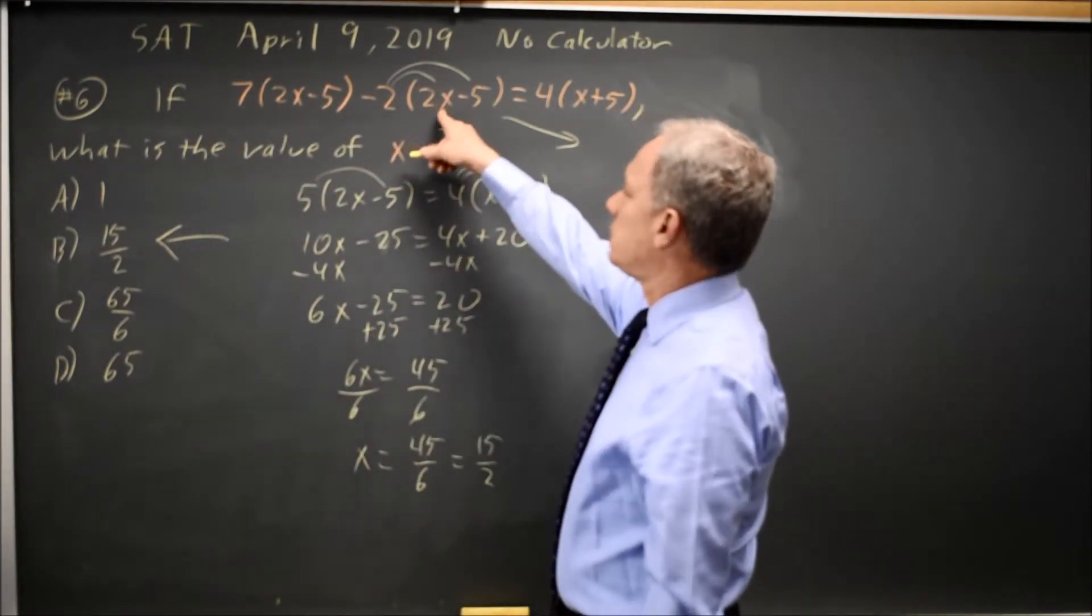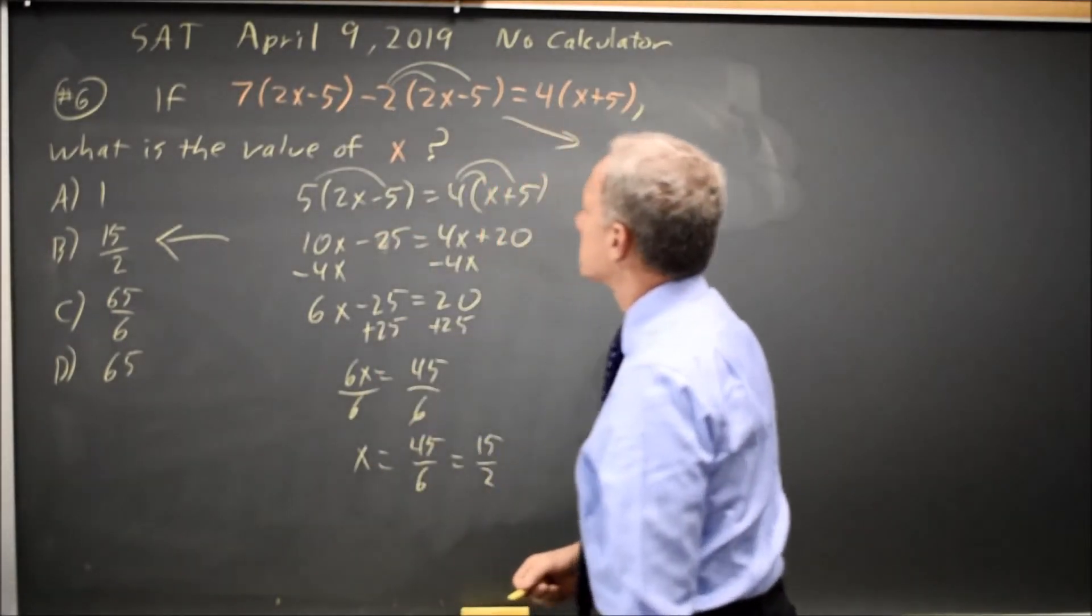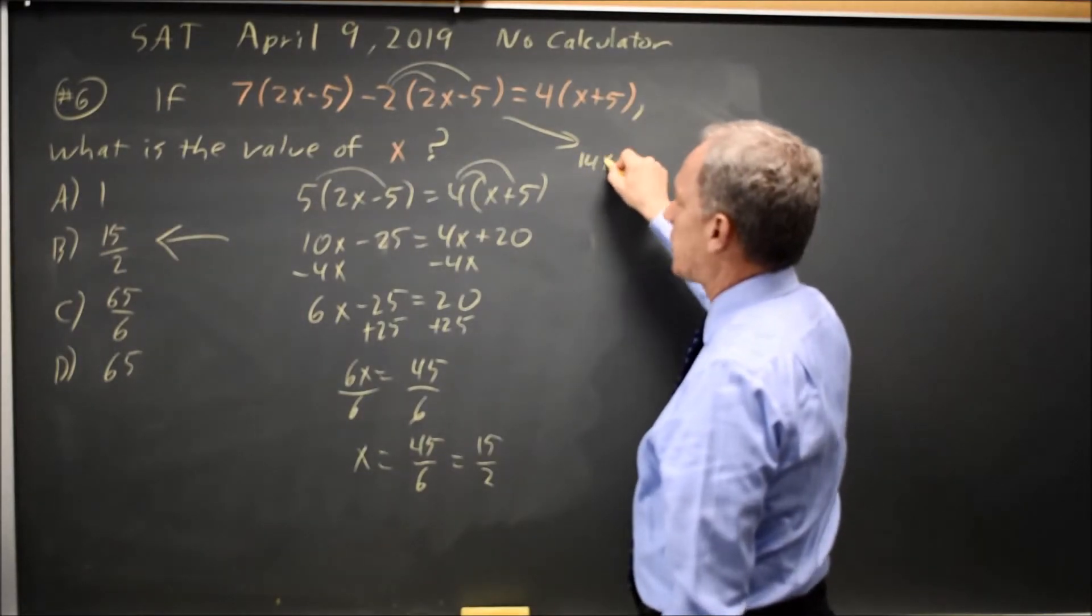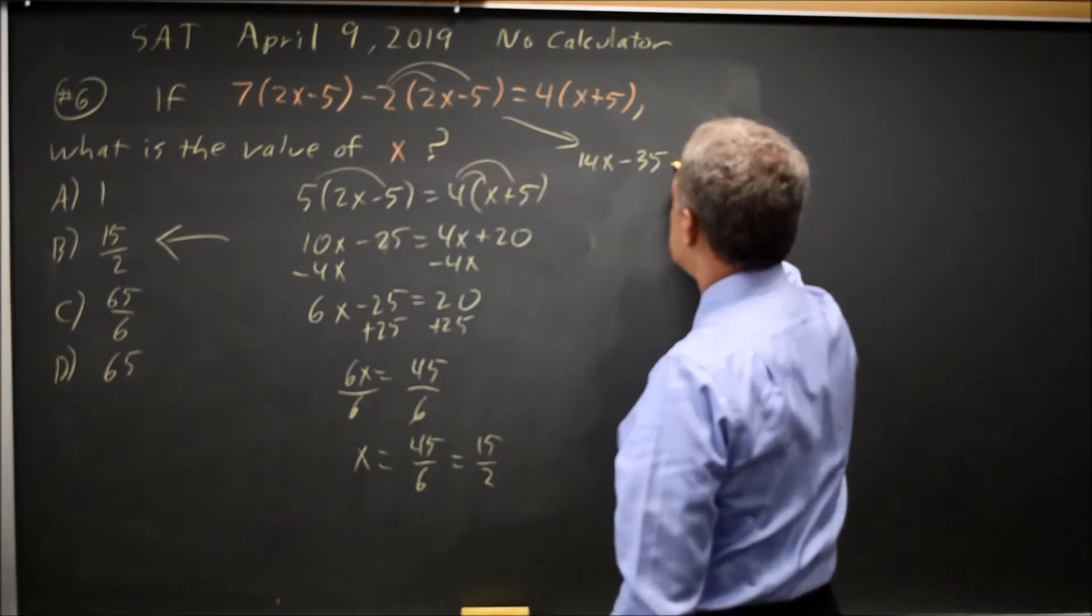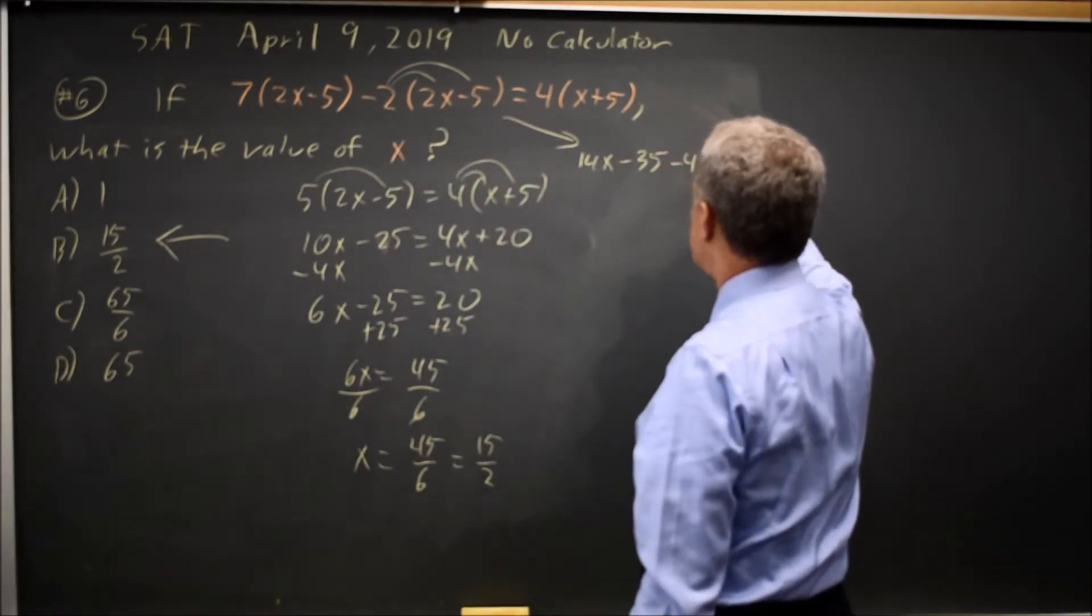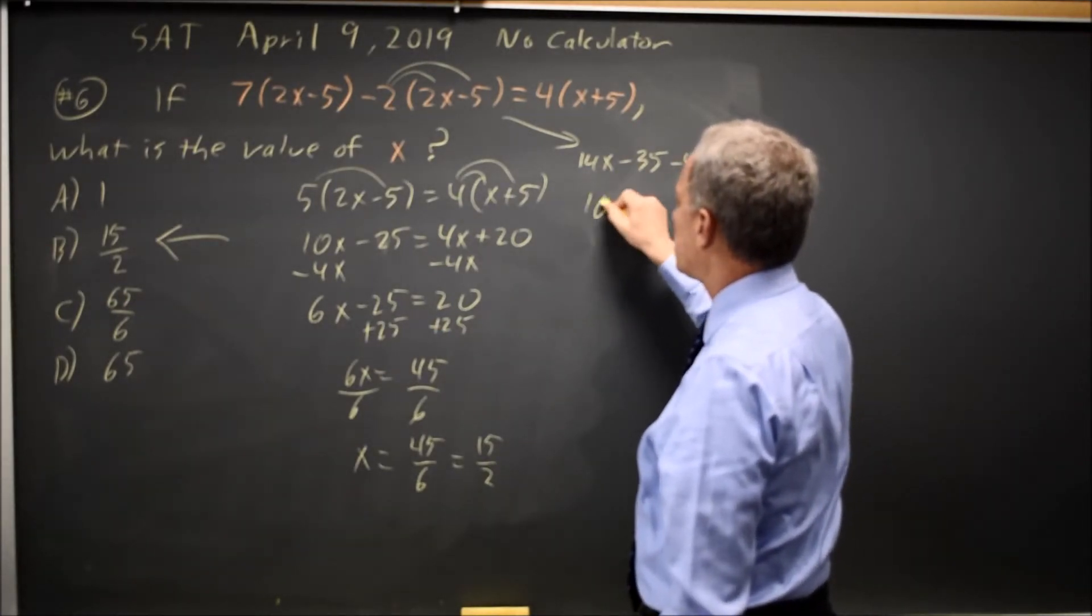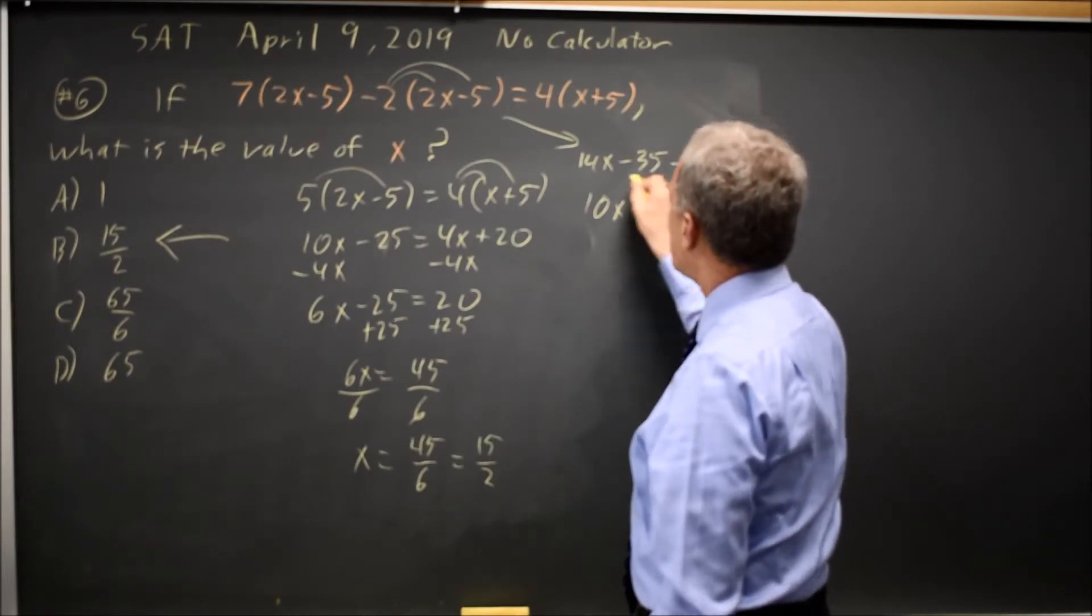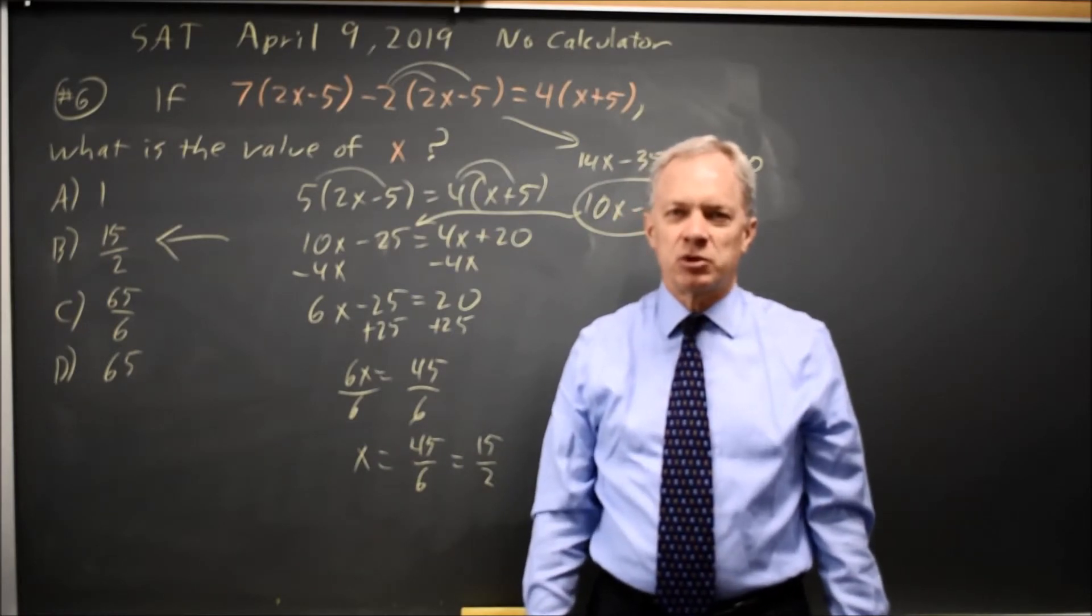If back here you didn't collect the 2x minus 5 terms, you could distribute to get 7 times 2x is 14x, 7 times negative 5 is negative 35, negative 2 times 2x is negative 4x, and negative 2 times negative 5 is positive 10, and 14x minus 4x is 10x, negative 35 plus 10 is negative 25, and from there, we're on the same path as my first approach.